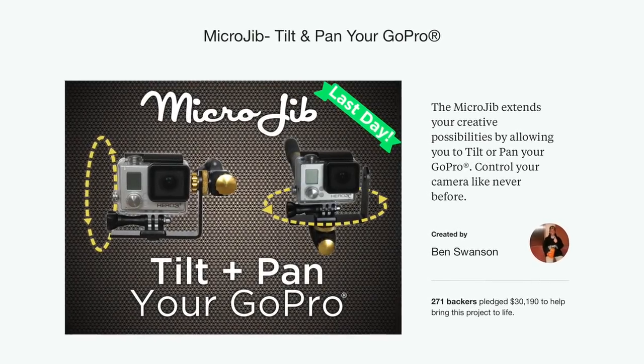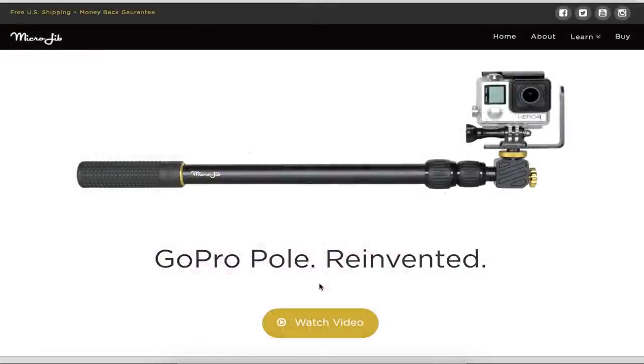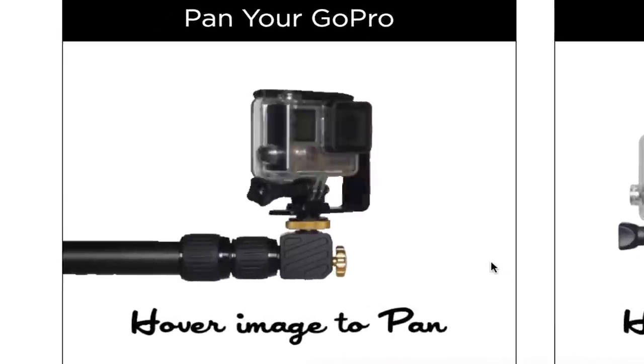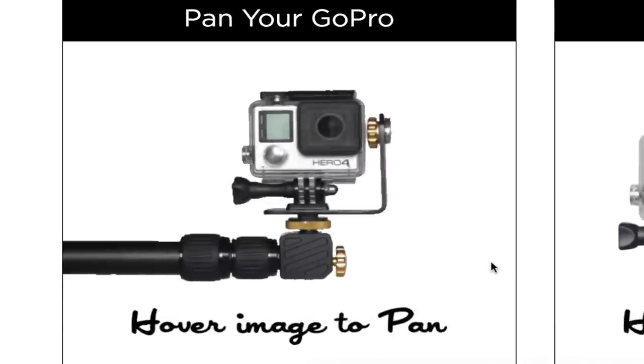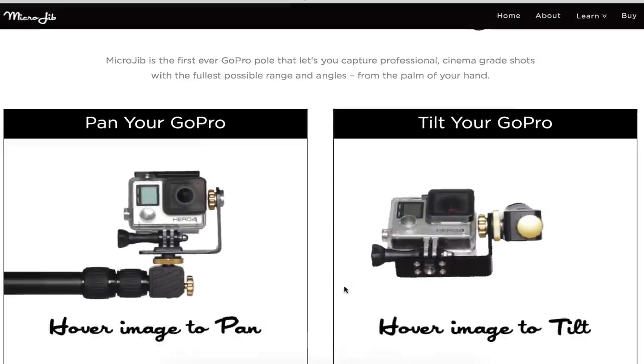After two years in the making and successfully launched with the help of a Kickstarter campaign, the Microjib does everything other poles do but adds tilt and pan functionality, allowing for amazing creative freedom and camera motions that are unachievable with other extension poles.